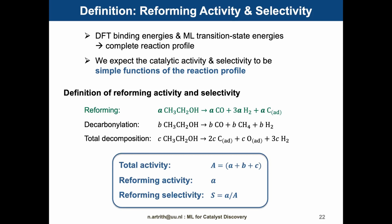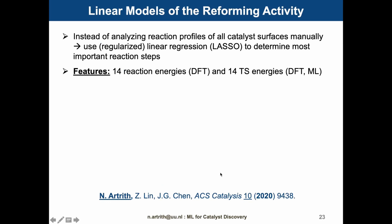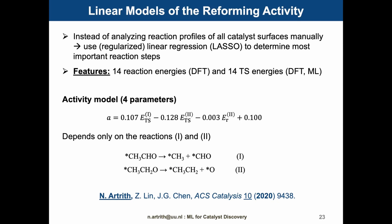The total activity is then the sum of the activities of the three reactions. The reforming activity is small a, and the reforming selectivity is given by the ratios. Instead of analyzing our predicted reaction profiles manually, we fitted a linear regression model of the activities to the 14 reaction energies and the 14 transition state energies. We used a LASSO model to determine the most important features. The resulting activity model depends only on three features — two transition state energies and one reaction energy. The model only depends on two reactions: one CC-breaking reaction and one CO-breaking reaction. LASSO was able to identify the most important reaction steps for activity prediction.